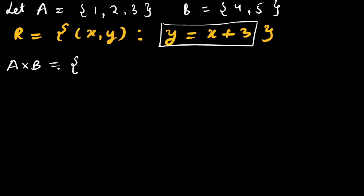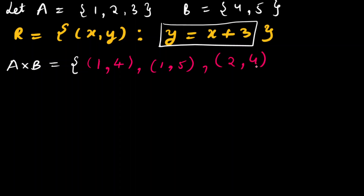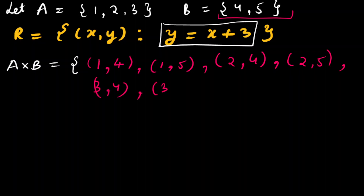First I will write the Cartesian product of A and B. A × B: take the first element of A with all elements of B — (1,4) and (1,5). Then second element: (2,4) and (2,5). Then third: (3,4) and (3,5).